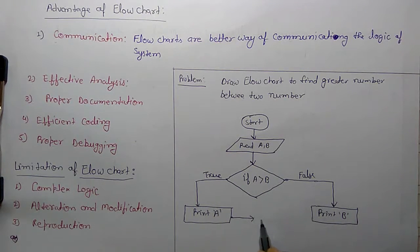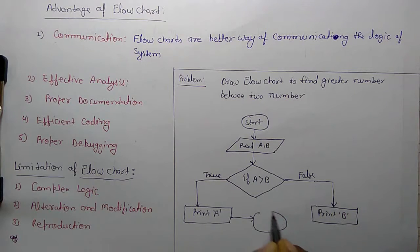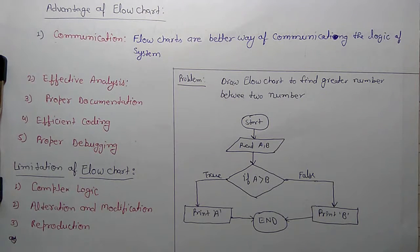Then print a, because a is greater than b, end symbol. So this is flowchart for finding greater number between two numbers. Thank you.